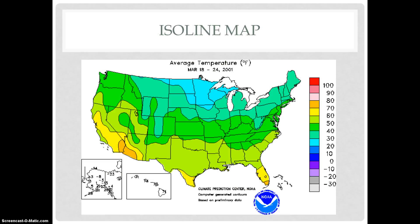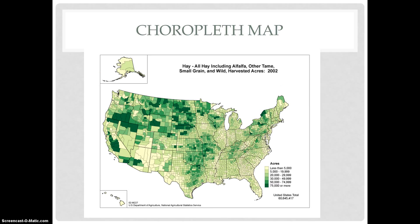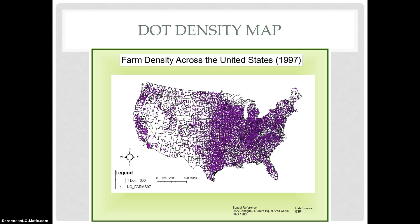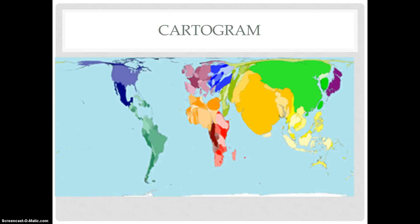For example, an isoline map shown here uses lines to connect areas of the same average temperature, and can also be considered a choropleth map as it uses colors to depict various variables. Another choropleth map shows the amount of hay, small grain, and harvested acres in a particular area using different degrees of shading. A proportional symbol map uses different size circles to show different size occurrences — in this case, the gross domestic product of mining. A dot density map shows farm density across the United States, where each dot represents 300 farms. And a cartogram uses land area to represent the population of various countries.